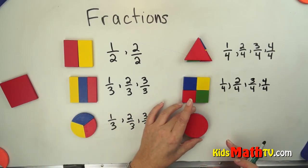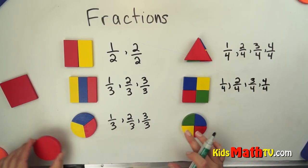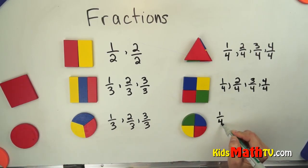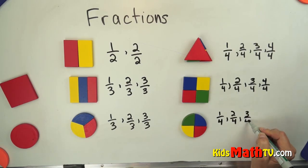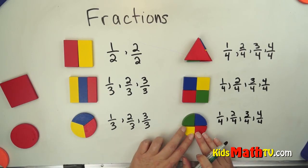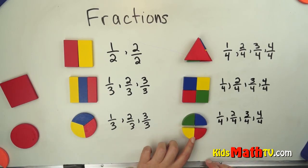So we have the circle, the whole circle, can be split into four equal parts. One fourth, two fourths, three fourths, or four fourths. And again, if you take two fourths, you actually have one half.